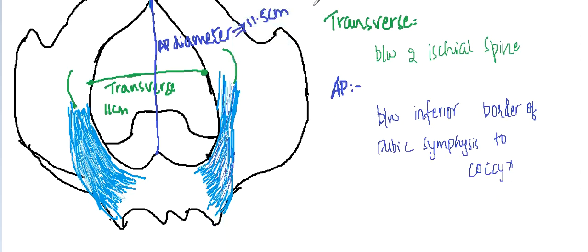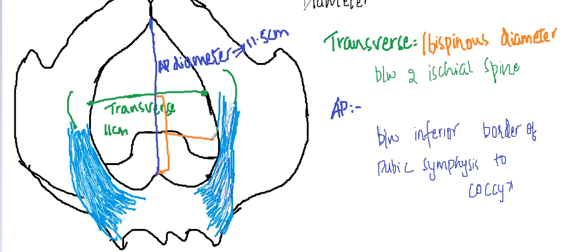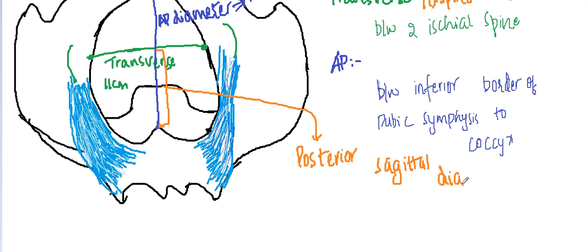The posterior sagittal diameter extends from the tip of the sacrum to the midpoint of the bispinous diameter — that is, the transverse or bispinous diameter. This posterior sagittal diameter is 5 centimeters.